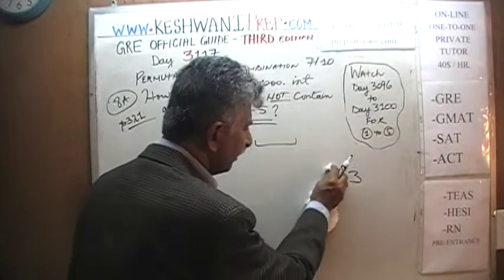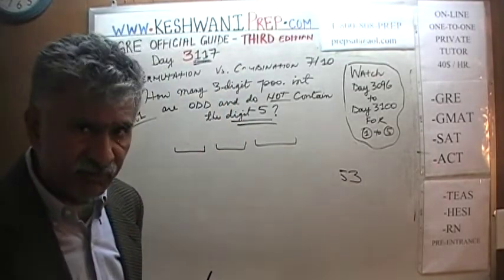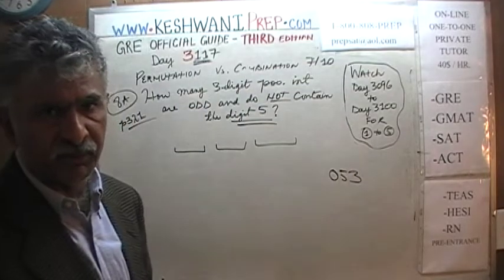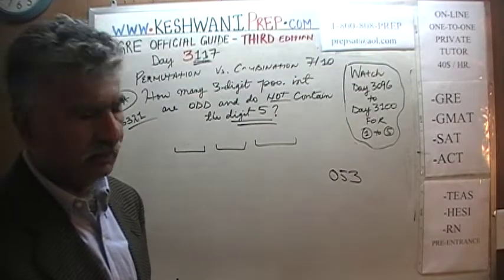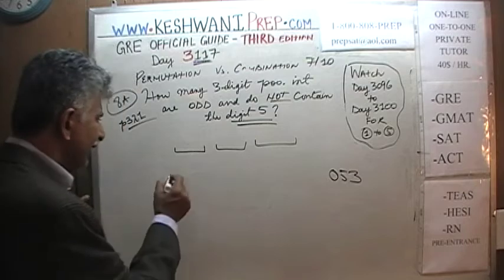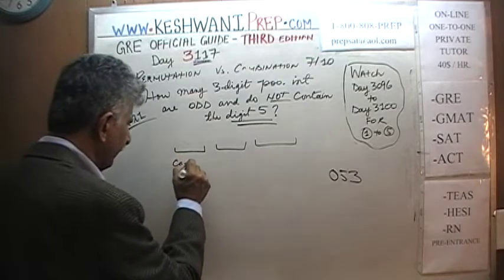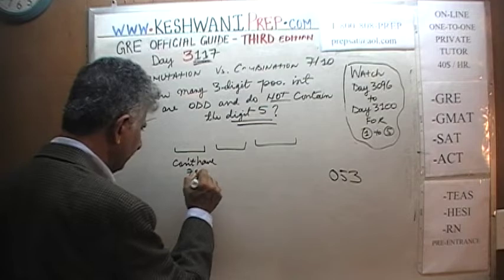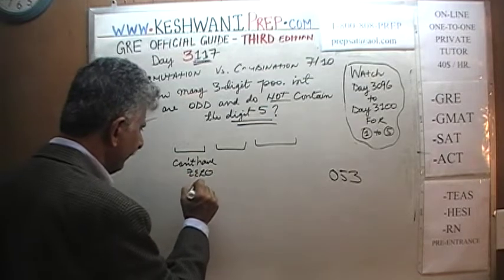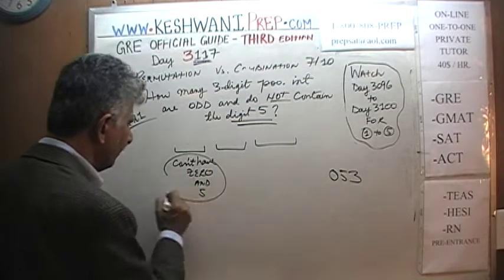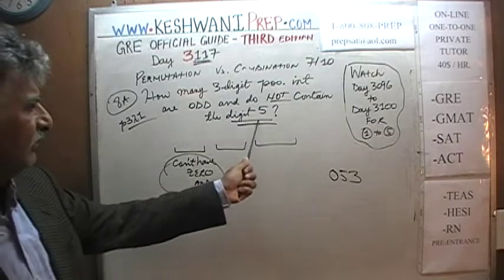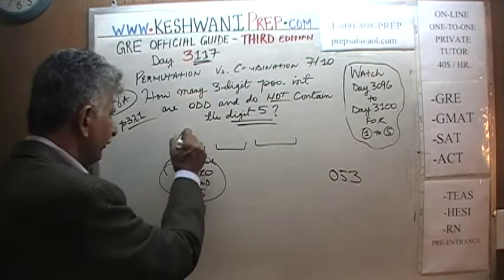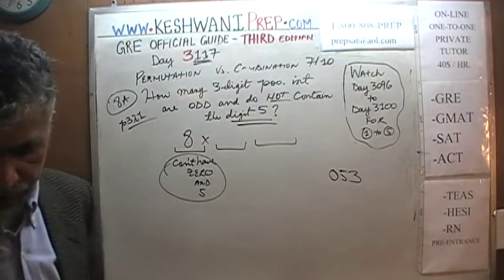In other words, if it's a three-digit number, we can't have a zero in the hundreds place. So in this spot, we can't have zero, and we can't have five. We can't have five anywhere. So there are only eight different ways of filling up the first spot.